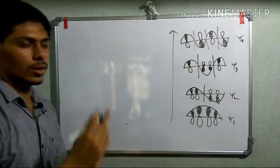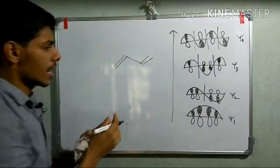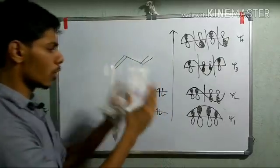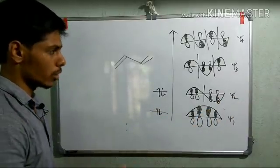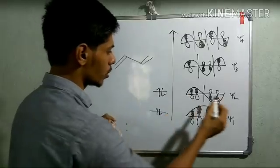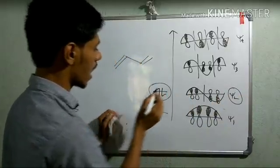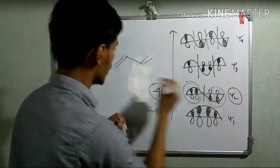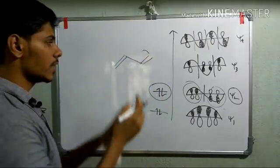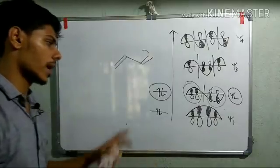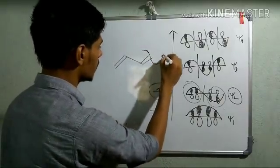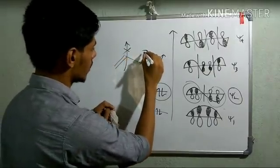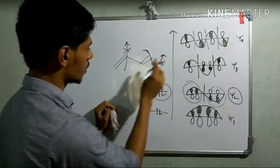For normal butadiene, there are four electrons placed in the lowest two molecular orbitals, psi 1 and psi 2. The HOMO is psi 2, and it has the highest coefficient on the two terminal carbon atoms. Therefore, in the general reactivity of butadiene, the reaction will always occur from the terminal positions and not from the inner side. This regioselectivity always follows reaction from the terminal position.